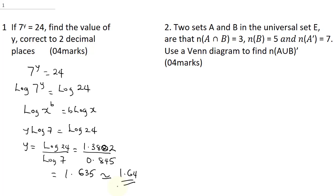In order to solve question 2, it says two sets A and B in the universal set E are that A intersect B is equal to 3, n of B is equal to 5, and A complement is 7.